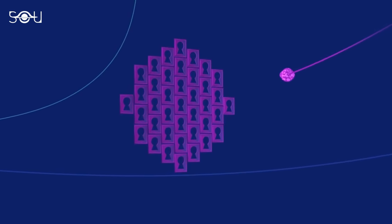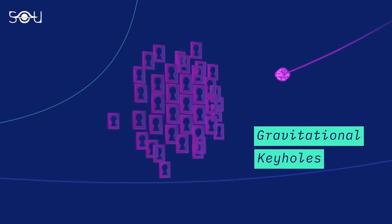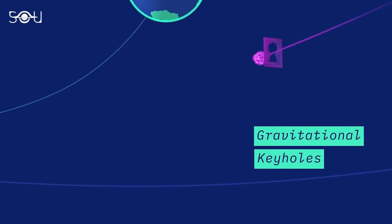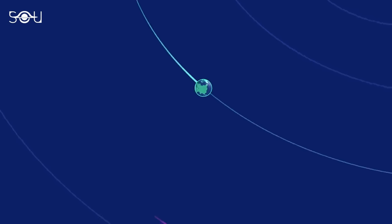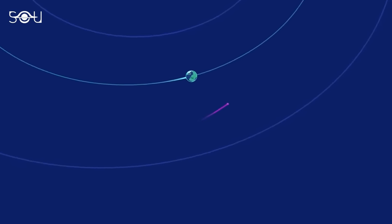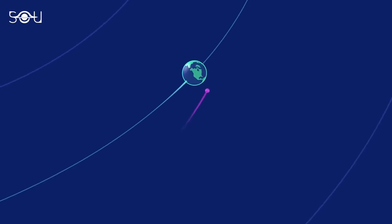A few of these trajectories line up with regions of space called gravitational keyholes. If Apophis were to pass through a keyhole, Earth's gravity would bend its path in just the right way to cause an impact on a subsequent orbit.